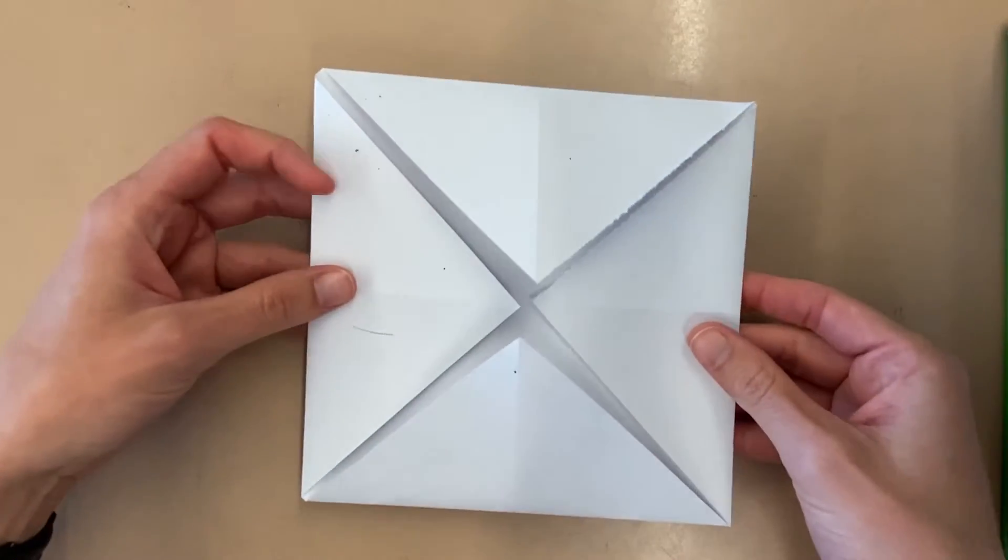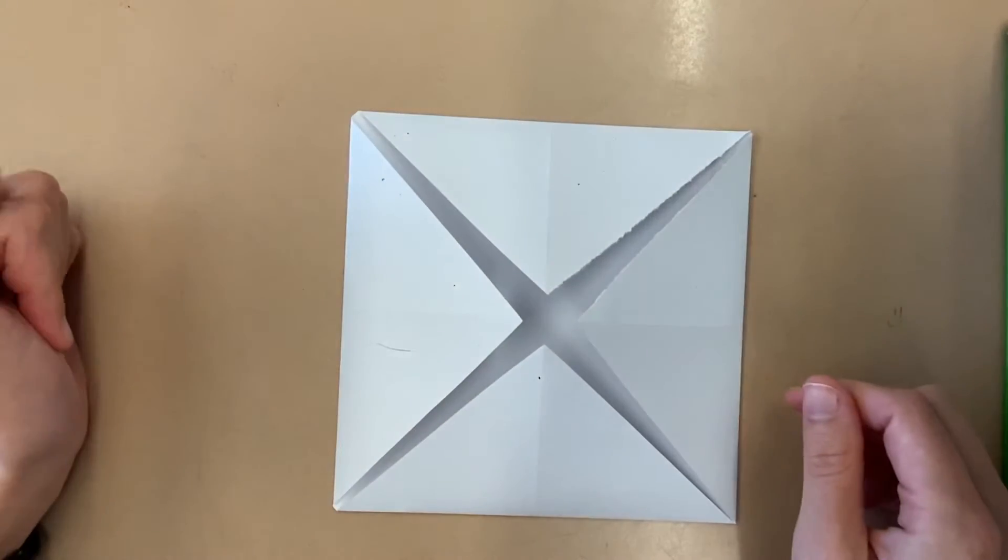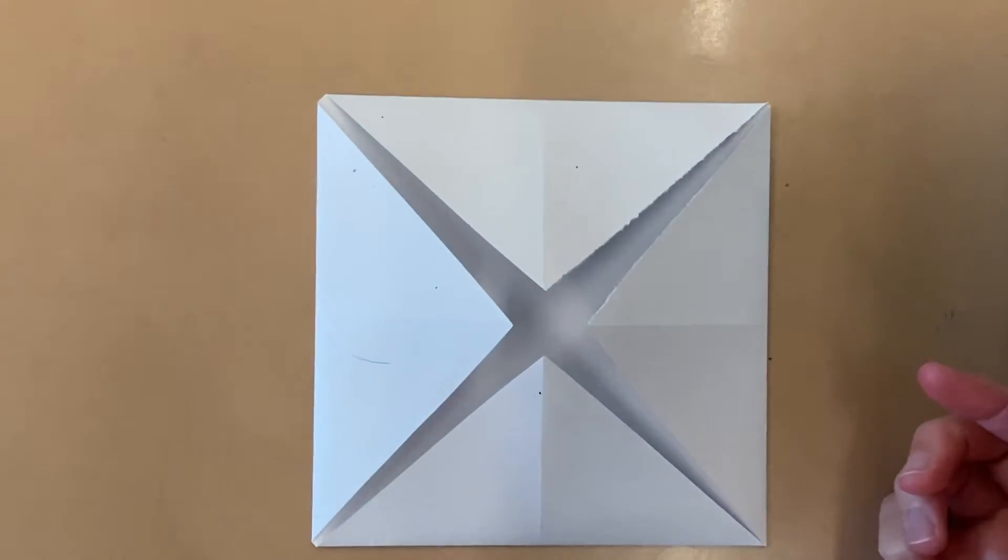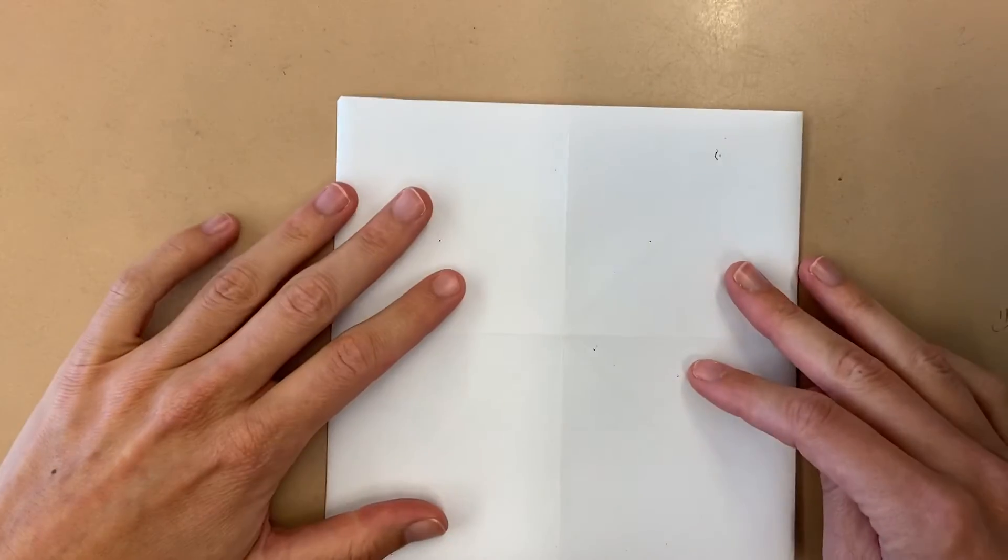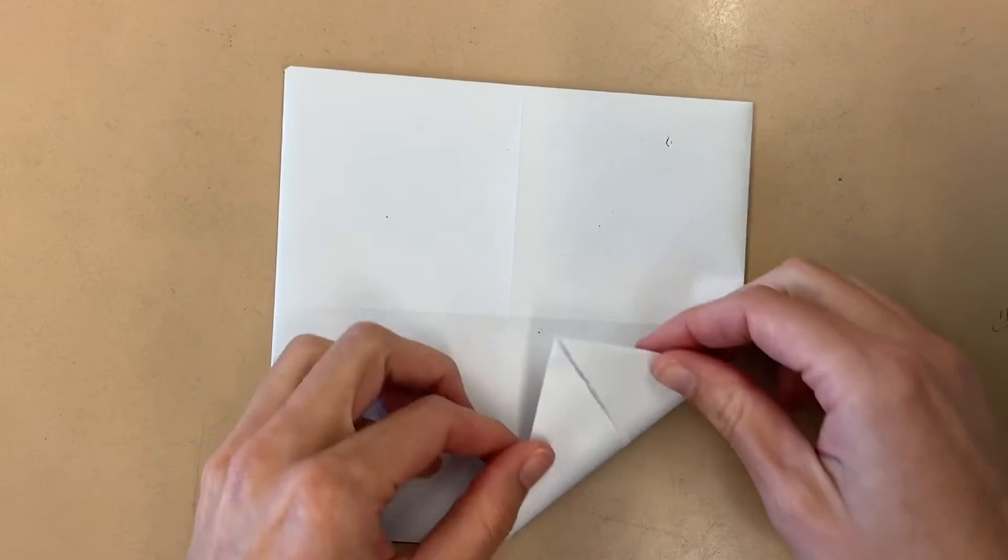Check with the person next to you. But you should have all four corners folded in. Once you have all four corners folded in, then flip it over and do the same thing again. Here's the center. You're going to fold all four corners into the center.